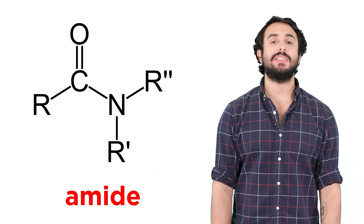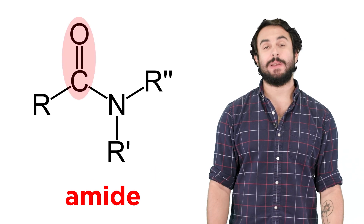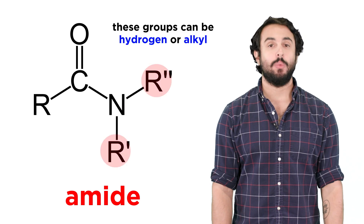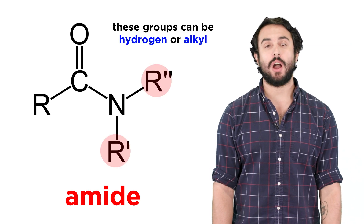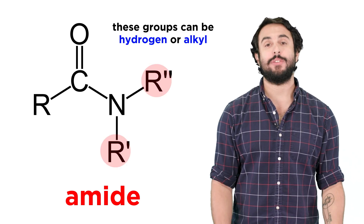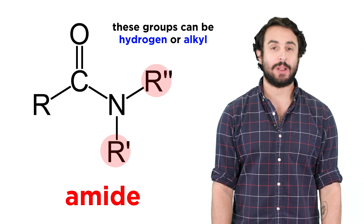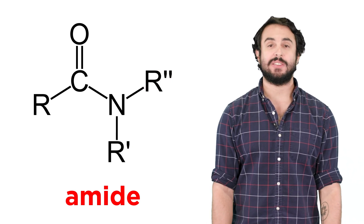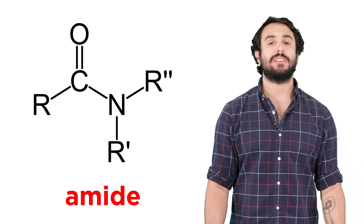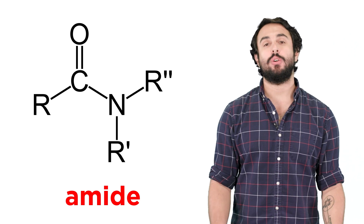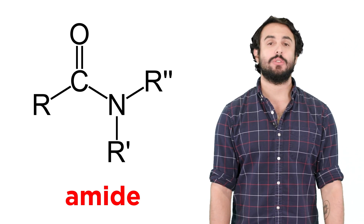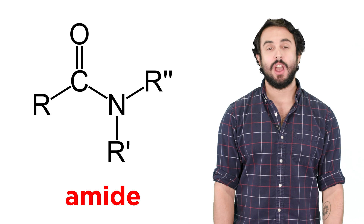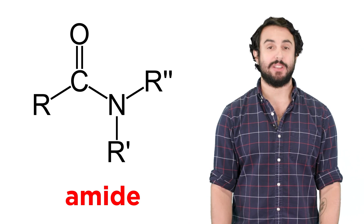As we recall, these consist of a carbonyl adjacent to a nitrogen atom, with the nitrogen bonded to two other groups, either hydrogen or alkyl in some combination. There is a lot to talk about with amides, both in the context of their synthesis and their role in nature, so let's start out by getting a more sophisticated understanding of this functional group and its properties.